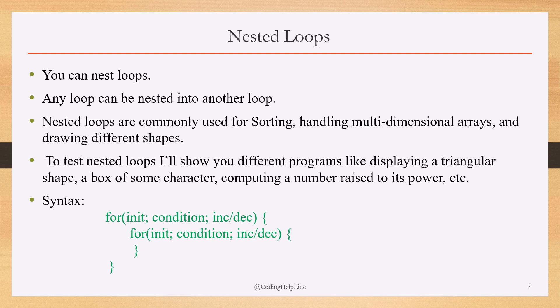This is the general syntax — for example, I have nested two for loops. The outer for loop has initialization, condition, and increment/decrement in its parenthesis, and within the body of that loop there is another inner loop with the same syntax. This outer loop runs, for example, n times, and for each iteration of the outer loop, the inner loop will execute. Any combination of for, while, or do-while loops can be nested inside each other.